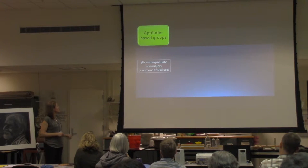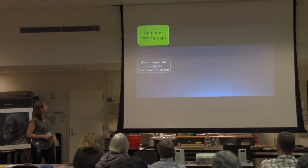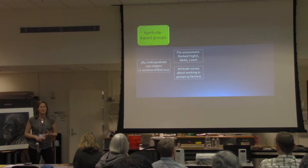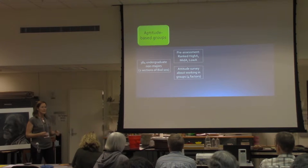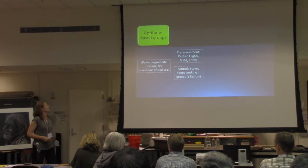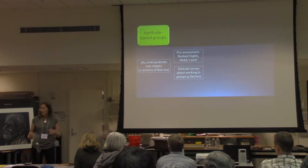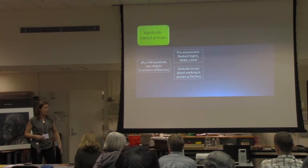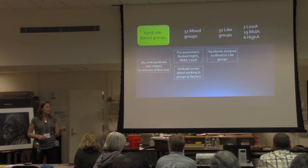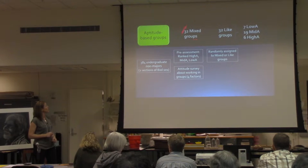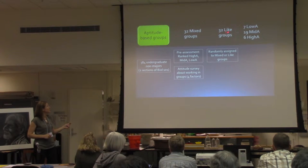Last winter we had 384 undergraduate students across two sections of Bio 101. We had them take a pre-assessment and an attitudes-based survey about group work on the first day of class. The pre-assessment was 60 questions and was used in all three iterations of the study. It gave us a grade distribution that we used to rank students as high, mid, or low in content knowledge. We then randomly assigned students into either mixed aptitude or like aptitude groups, ending up with 32 mixed groups and 32 like groups.